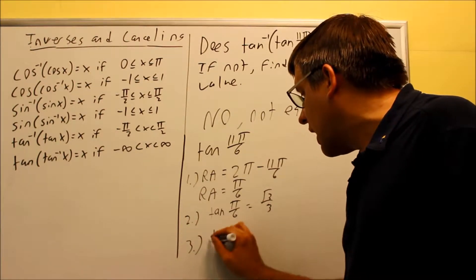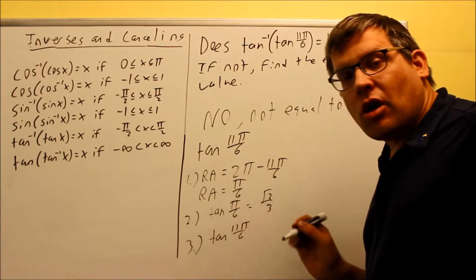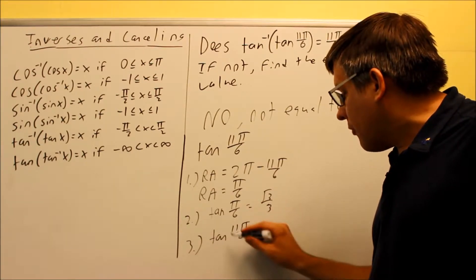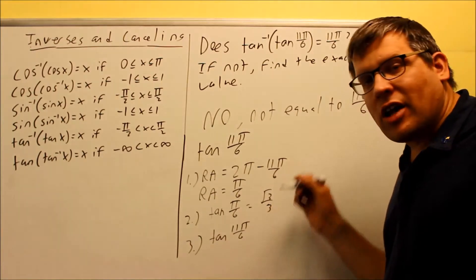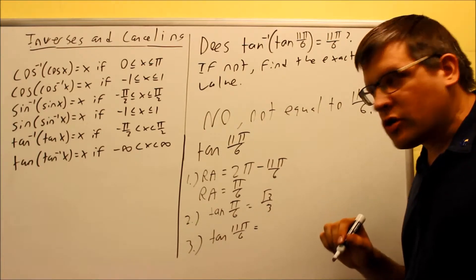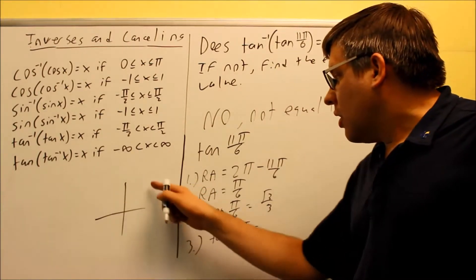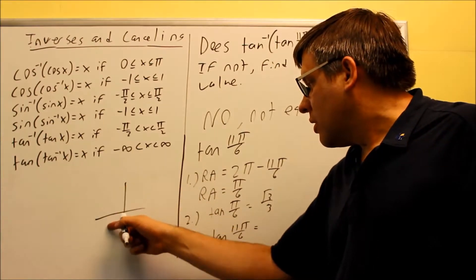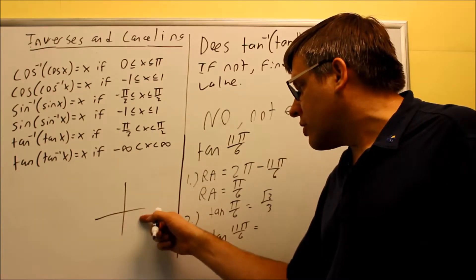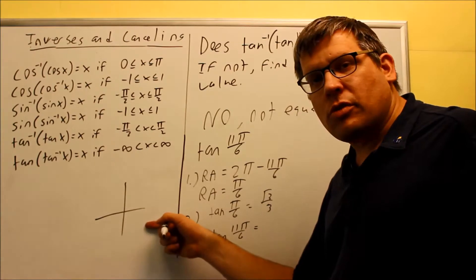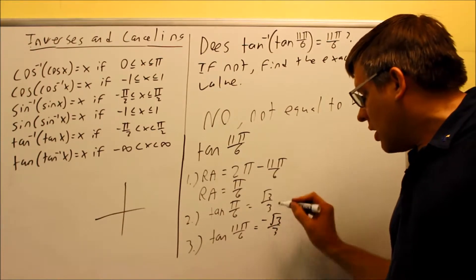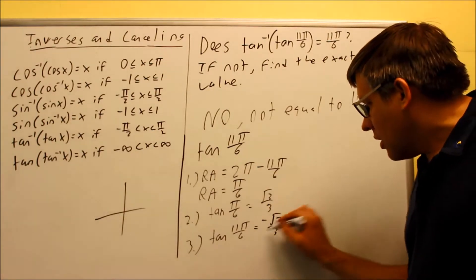Step 3 means we've got to apply the appropriate sign using the All Students Take Calculus sign chart. We have to see whether the tangent value is positive or negative. We're in the fourth quadrant — in the "Calculus" quadrant, cosine is positive and everything else is negative. So tangent is negative in Q4, which means the value has to have a negative sign: negative √3/3. That's the exact value.